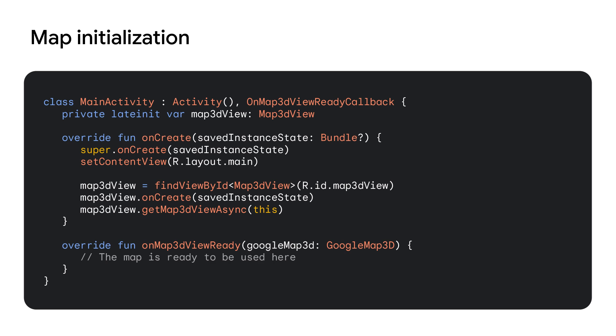Here is a minimal example of the main activity that demonstrates this. First, we'll inflate our view using the setContentView method. Then, we'll retrieve our Map 3D View object using the identifier we assigned it in the XML file. Next, we'll create or restore the state of the underlying map view controller. And finally, we'll register the activity as a listener for when the map is ready. The onMap3DViewReady method of the onMap3DViewReady callback interface will be called once the Map 3D View has been successfully initiated and the GoogleMap3D object is ready for you to use. This object provides the means to control and manipulate the 3D map, including setting the camera, adding markers and models, and much more. And that's the fundamental process of embedding a 3D Google map into your Android application using the Map 3D View.